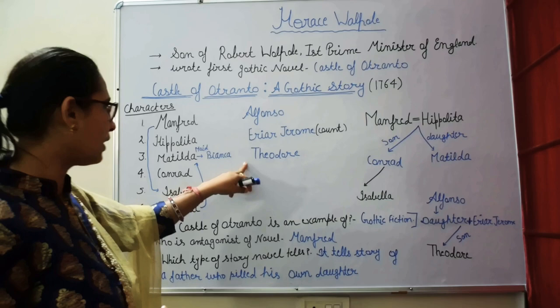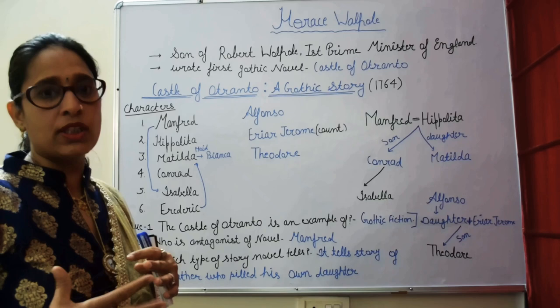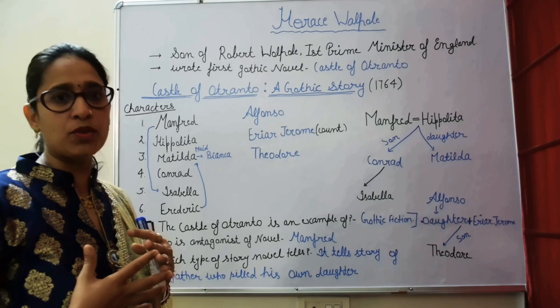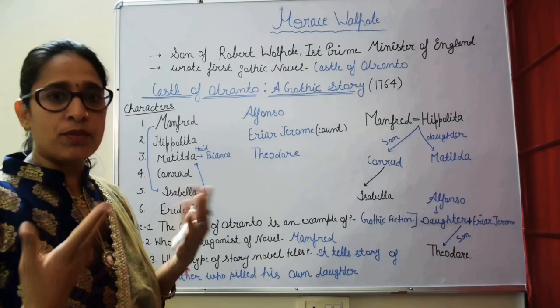Manfred mistakes Mathilda for Isabella in the cave and kills his own daughter Mathilda. He is living with the grief of this tragedy, and his family line is finished.